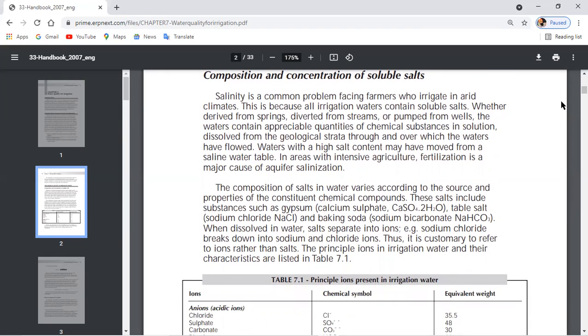Salinity is a common problem facing farmers who irrigate in arid climates. This is because all irrigation waters contain soluble salts, whether derived from springs, diverted from streams, or pumped from wells. Salinity is the major problem in arid areas. When we irrigate, farmers basically face salinity.